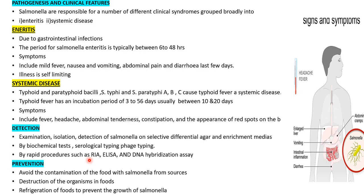Regarding pathogenesis, Salmonella are responsible for a number of different clinical syndromes broadly classified into two categories: enteritis and systemic disease. Gastrointestinal infections are predominantly associated with Salmonella serotypes which occur widely in animals and humans. The incubation period for Salmonella enteritis is typically between 6 to 48 hours.